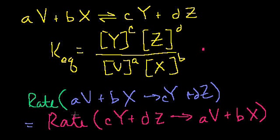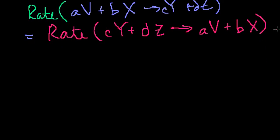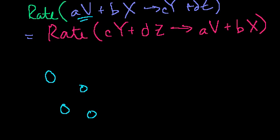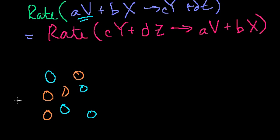Let's think about what drives these rates of reaction. In order for the forward reaction to happen, we have to have A molecules of V in the vicinity of B molecules of X, in the right configuration and close enough for the reaction to occur. So the reaction is really driven by the probability of finding A V molecules and B X molecules all within a close enough proximity that they can actually react.